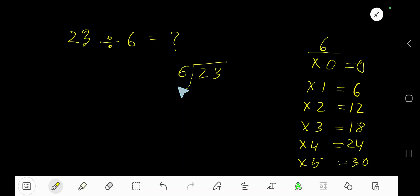23 divided by 6. Yes, 6 is a divisor, so we need the multiplication table of 6. 6 times 0 is 0, 6 times 1 is 6, 6 times 2 is 12, 6 times 3 is 18, 6 times 4 is 24, 6 times 5...